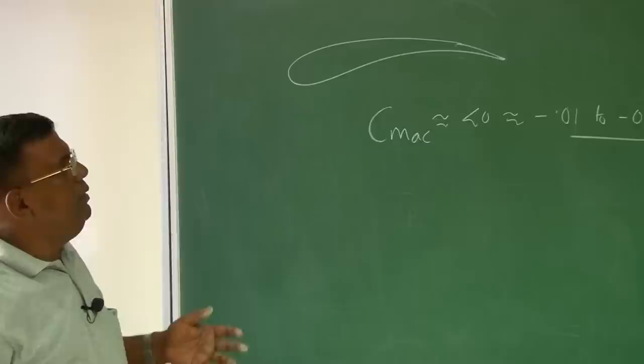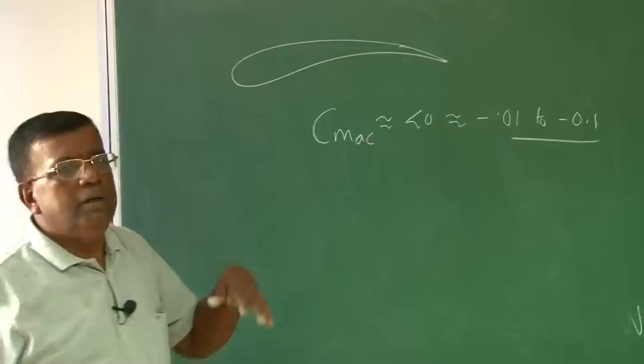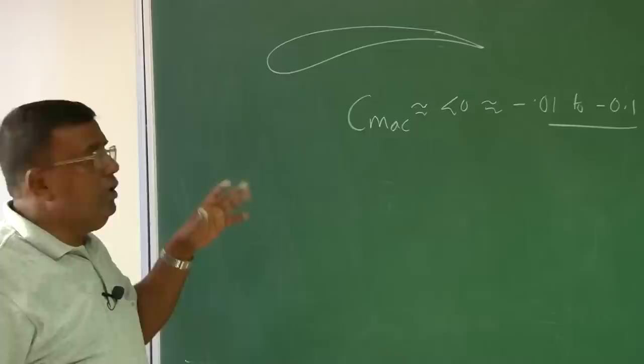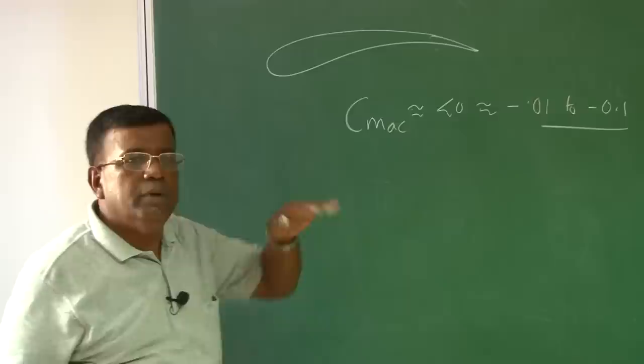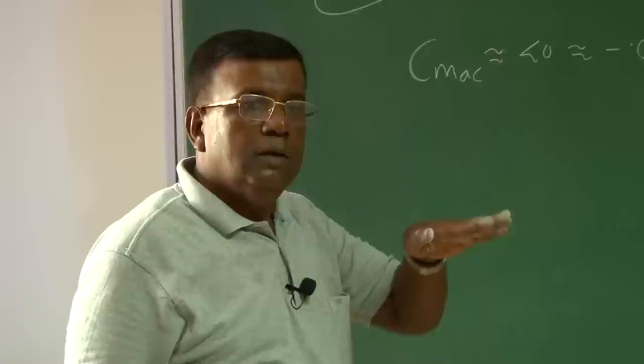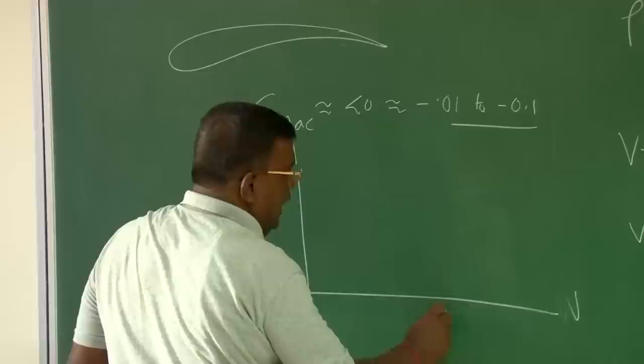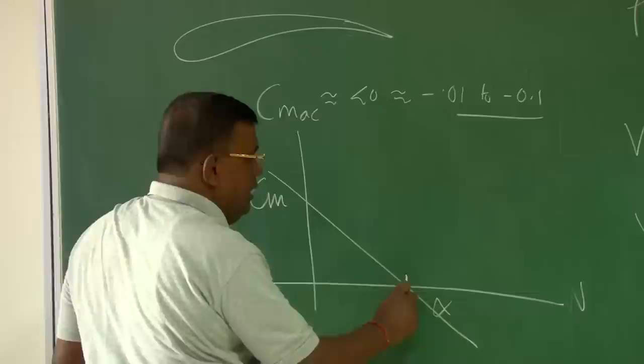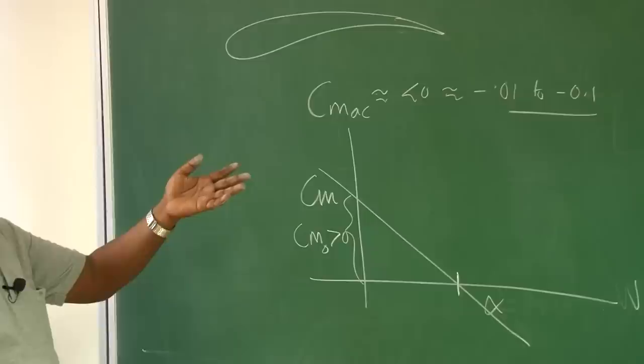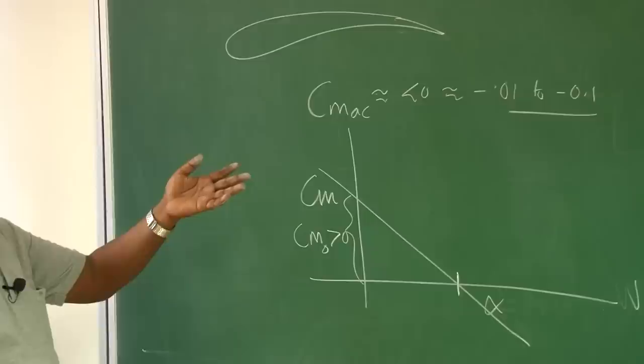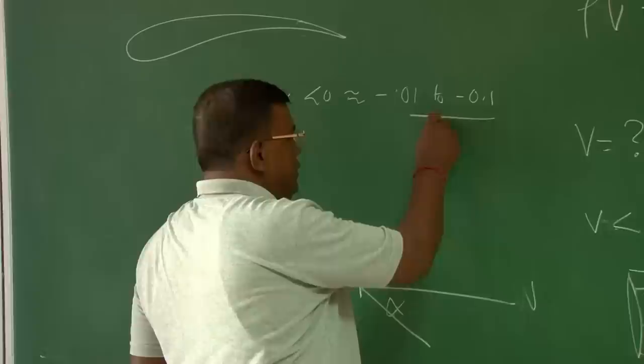Because of camber, whether at angle of attack or not, the aerofoil will have a natural nose-down pitching moment — CMAC less than zero. When trimming the airplane, you need CM0 greater than zero for stable trim at positive alpha. So when selecting an aerofoil, try to ensure CMAC is not unnecessarily large and negative.